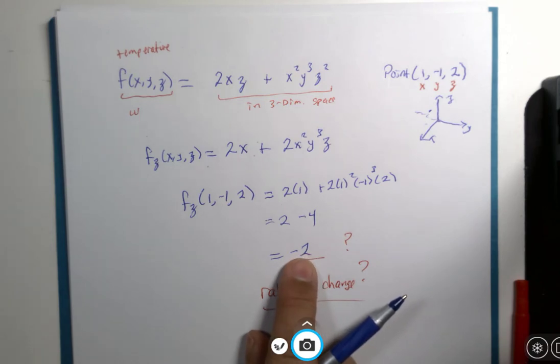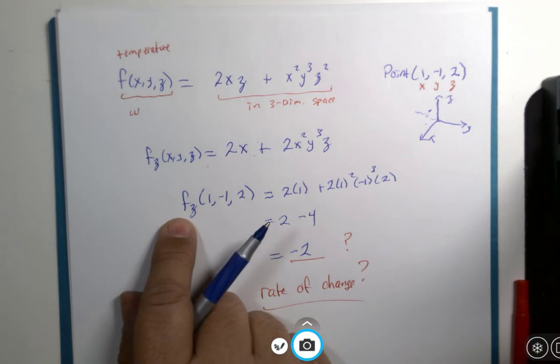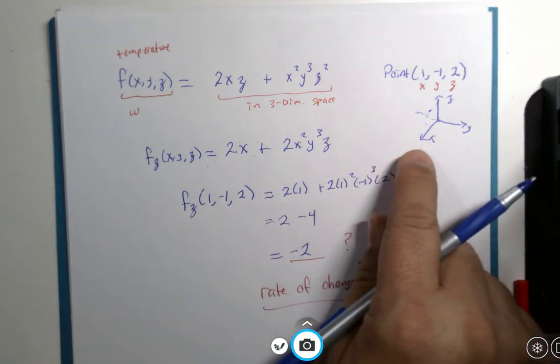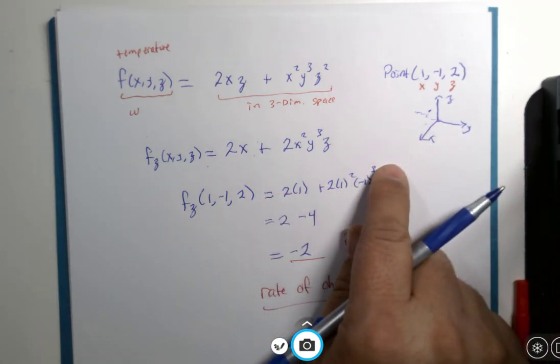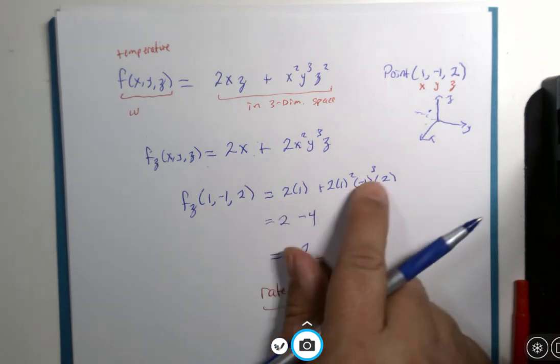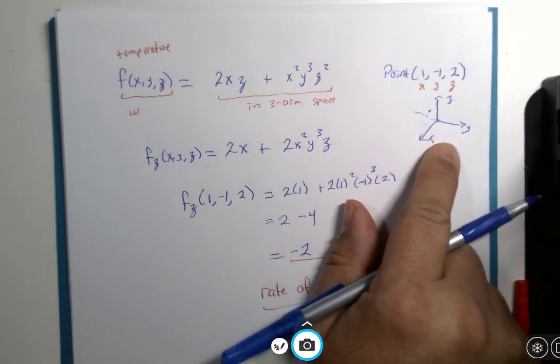If this was a positive number, your temperature would be going up. And then, if you did the x partial derivative, you'd see what would happen to the temperature if we went in the x direction. And the y partial derivative, what would happen to the temperature if we went in the y direction?